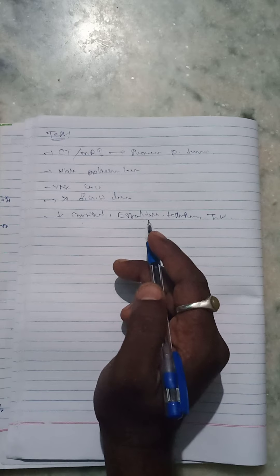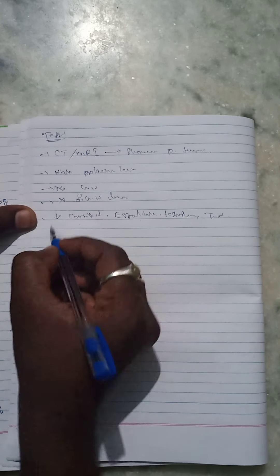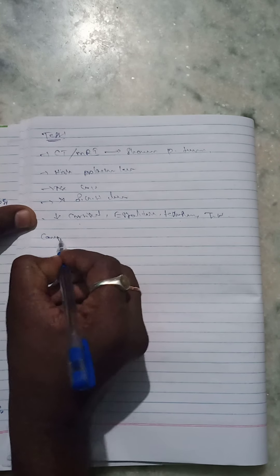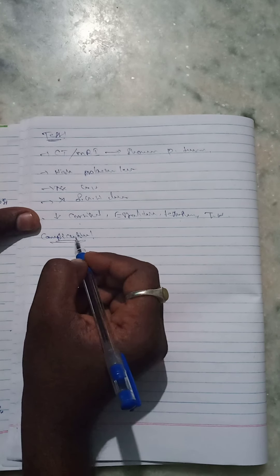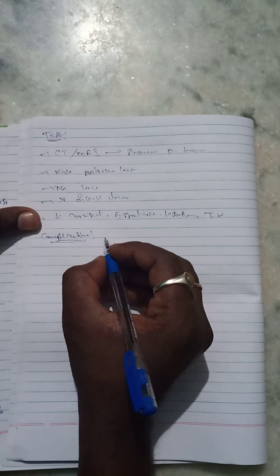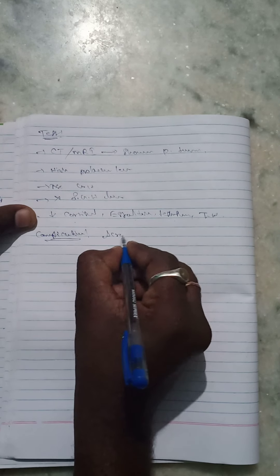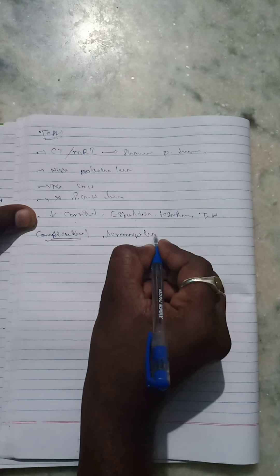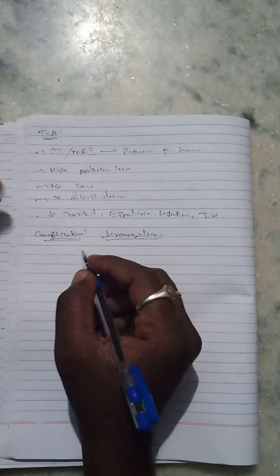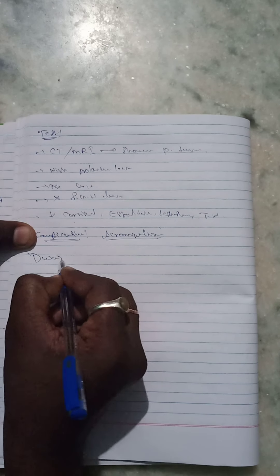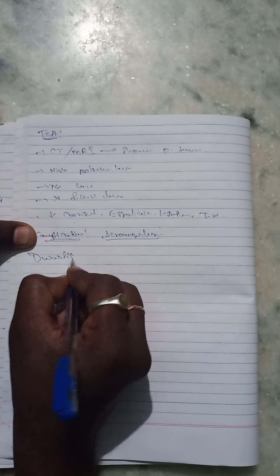What are the complications of gigantism? The complications of gigantism are the same as the complications of acromegaly. You should refer to the acromegaly complications for the gigantism complications as well.